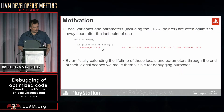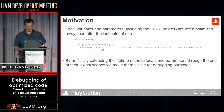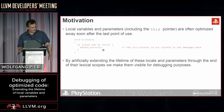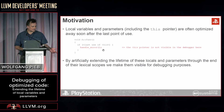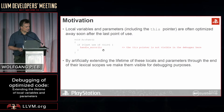As you're probably aware, local variables and parameters are often optimized away soon after the last point of use. Imagine you're sitting at this breakpoint here — this handle error routine that's marked in red — and you want to look at this pointer. It's not there, and you have to hunt around for it on the stack frame or the register file, and it slows you down.